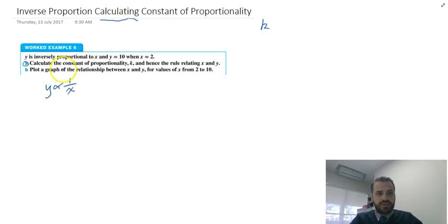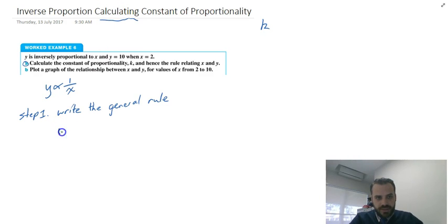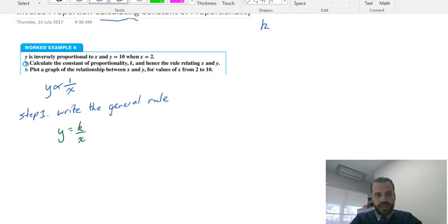Alright, so there's a little bit of work to do here. Step one is to write the general rule. Now the general rule for inverse proportion is y equals k on x. That's step one, the general rule.